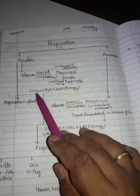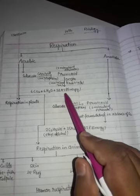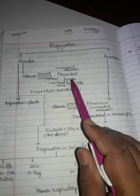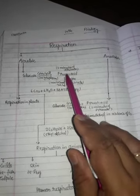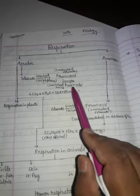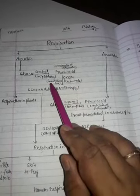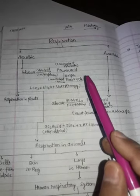Into carbon dioxide, water, and 38 ATP energy is liberated. Pyruvic acid reacts with oxygen and this process is called the Krebs cycle, and this process occurs in mitochondria.